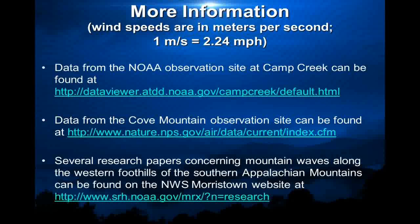This is the final slide. If you want to see wind information in real time — from Camp Creek at the wind tower at the elementary school, or from the Cove Mountain observation site — you can go to these two links. The wind speeds are going to be in meters per second, so you'll have to convert them. As you can see by the conversion shown, it's a little more than doubling to get to miles per hour. You can monitor what's going on at these websites in real time.